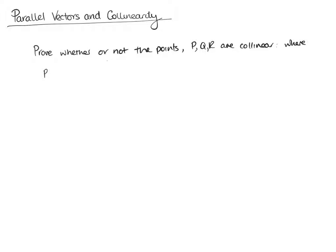So it could say: prove whether or not the points P(4, -1, 7), Q(3, 4, 10), and R(0, 18, 16) are collinear. The way to do this is to find out if these lines are parallel with a point in common. If they are, then they're collinear. If they are not, then they are not collinear.